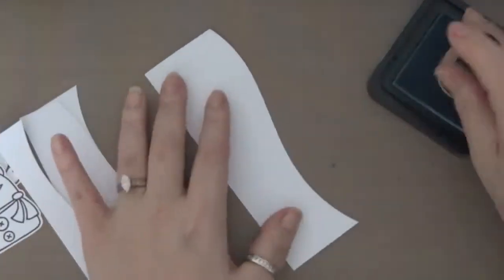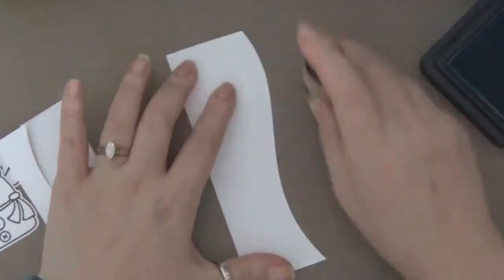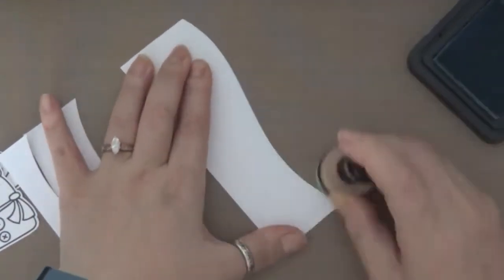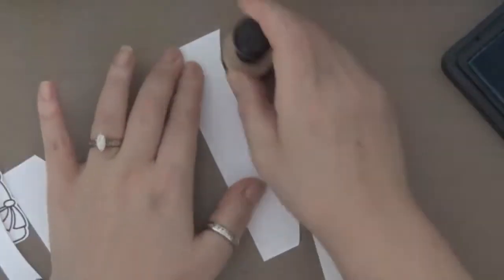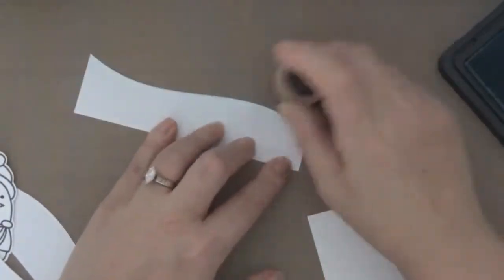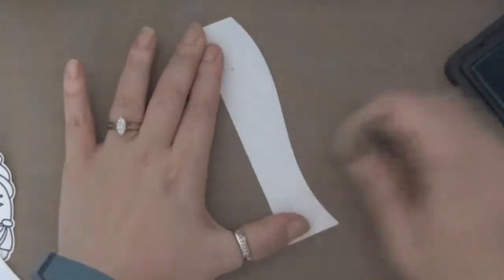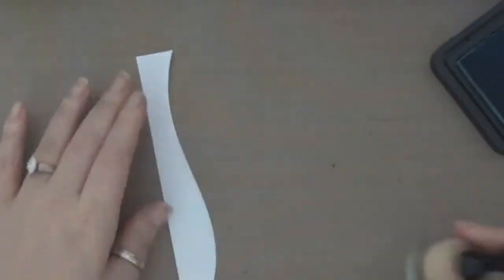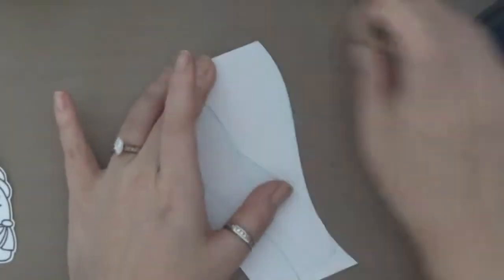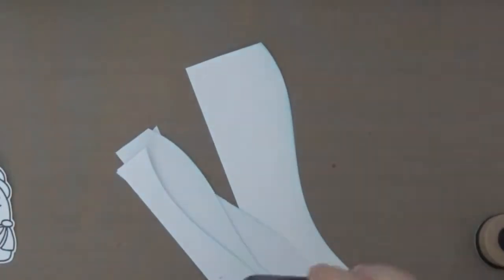So I'm adding some color using the Distress Inks, and I'm using Tumbled Glass, and I'm going to put just a little bit of color on these snowbanks. Not too much, just a little to make it look subtle.